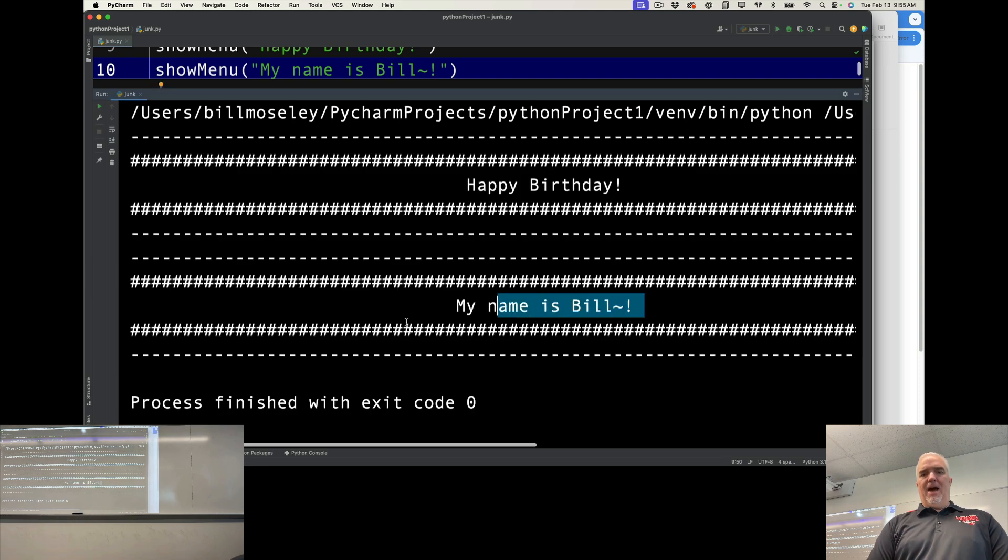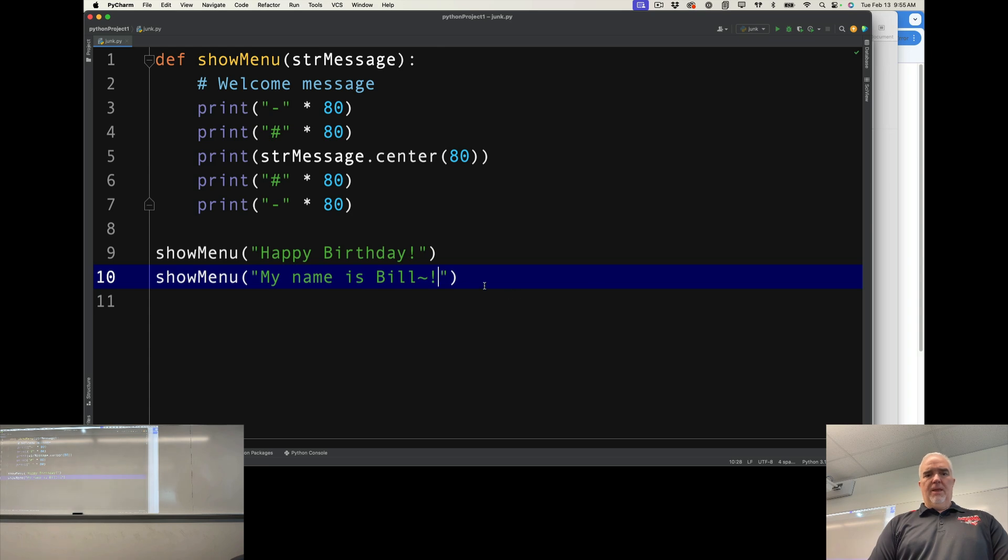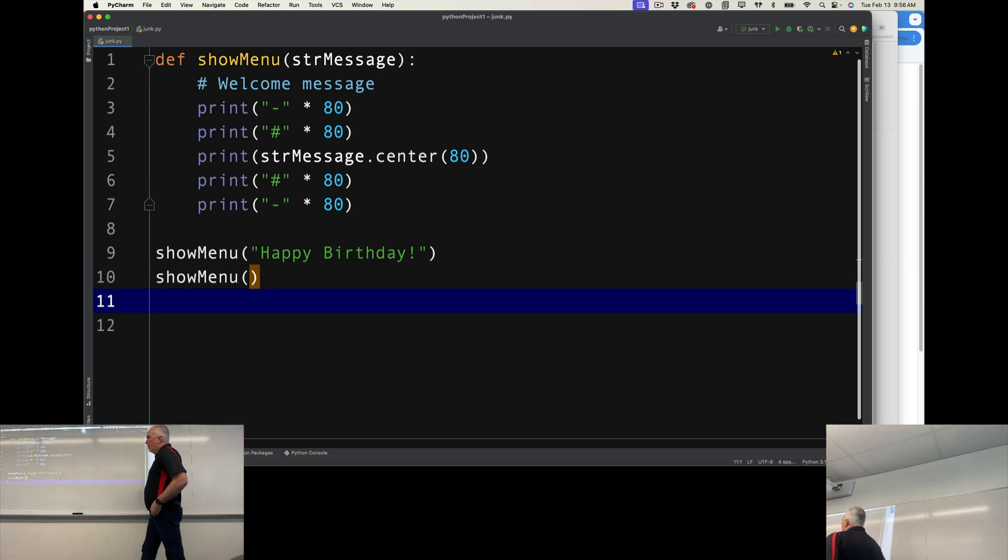So every time I pass it a message, it puts that message in. Now, if I try to call that function with no argument supplied for that parameter, you'll see it highlights that parenthesis.